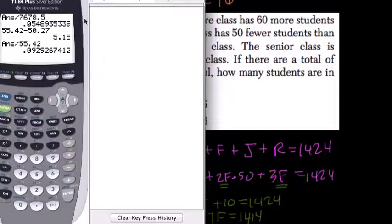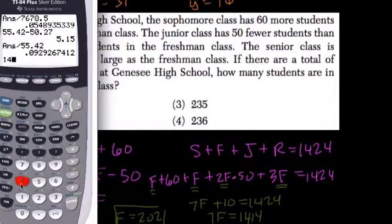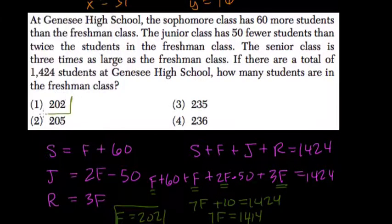I'm going to check that. So we have 1414 divided by 7, we get 202. Answer number 1. All right, let's keep going.